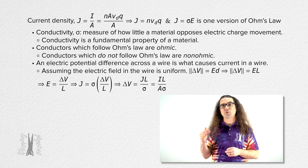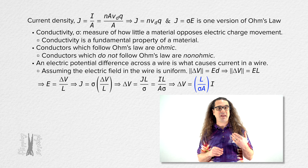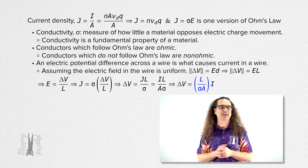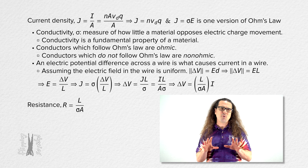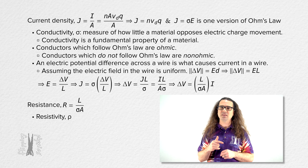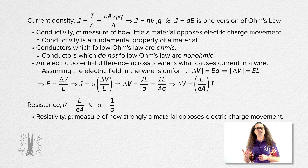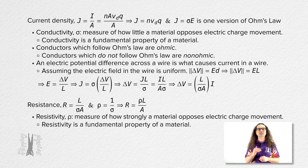Substituting current over wire cross-sectional area in for current density and solving for the electric potential difference across the wire, we notice that wire length over the quantity conductivity times cross-sectional area is defined as the resistance of the wire. The symbol for resistance is capital R. Resistance is typically defined in terms of resistivity rather than conductivity. Resistivity is a measure of how strongly a material opposes the movement of charges, making it the inverse of conductivity. Resistivity is also a fundamental property of a material. The resistance of a wire equals the resistivity of the wire material times the length of the wire divided by the cross-sectional area: R = ρL/A. This equation requires that the wire have uniform geometry — the cross-sectional area must be constant over the entire length.